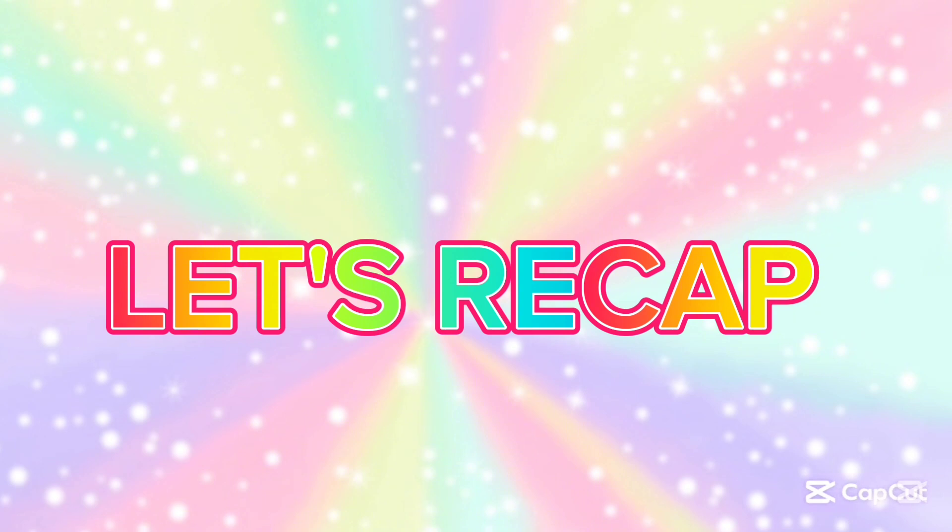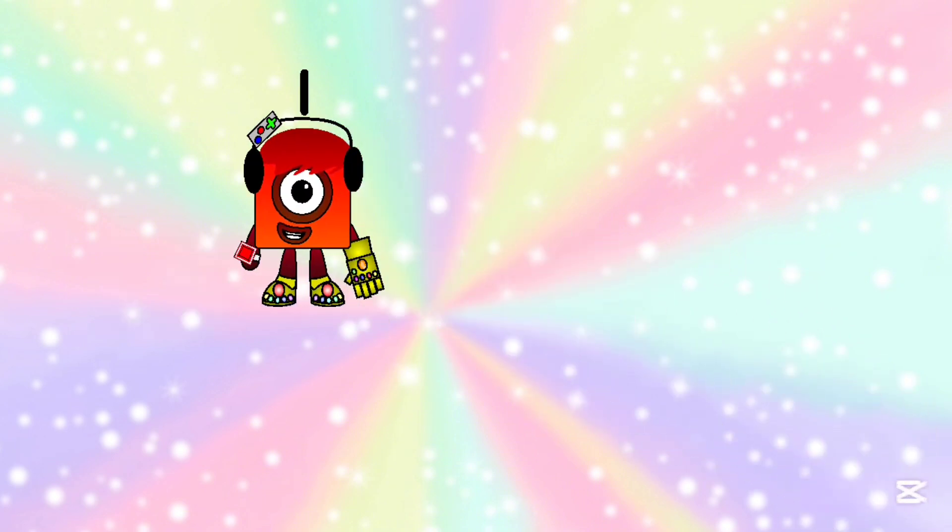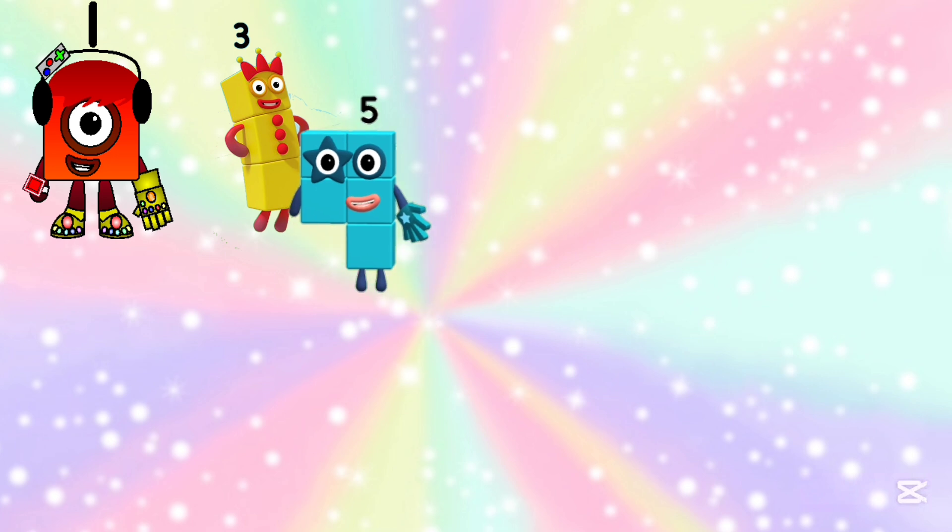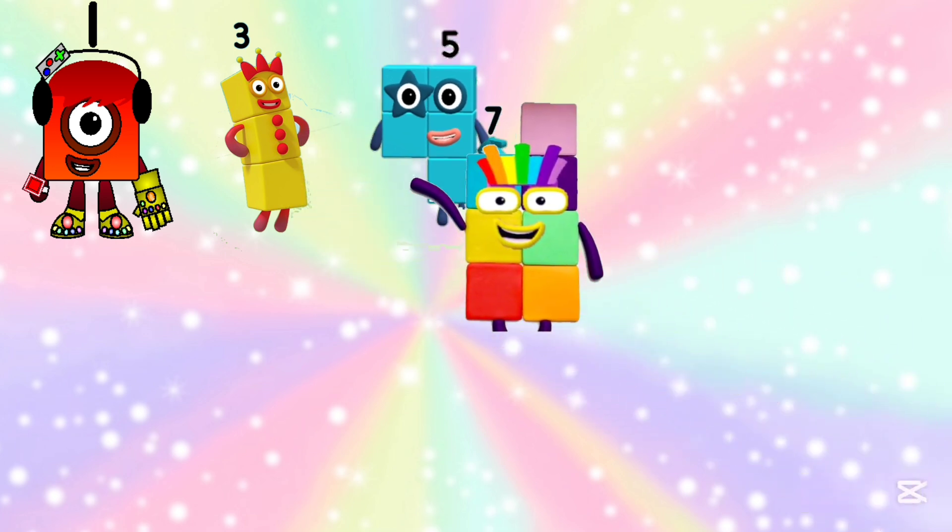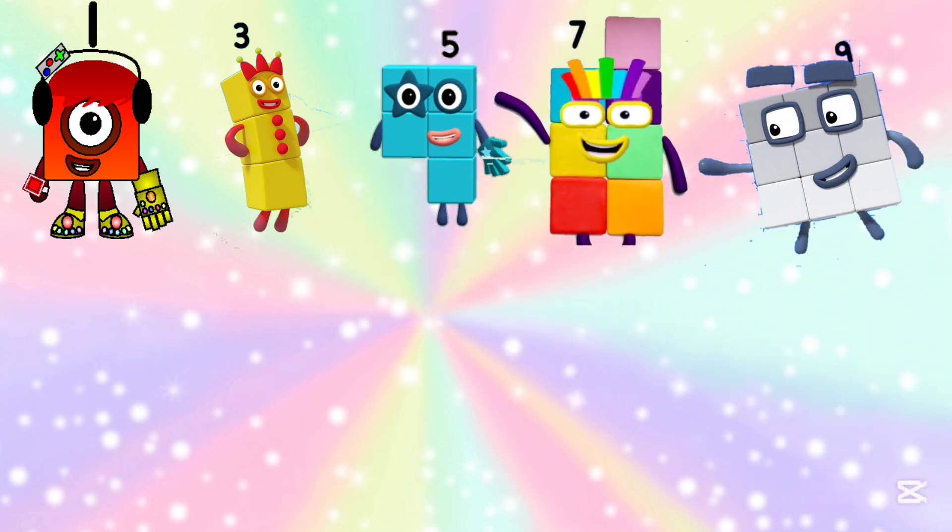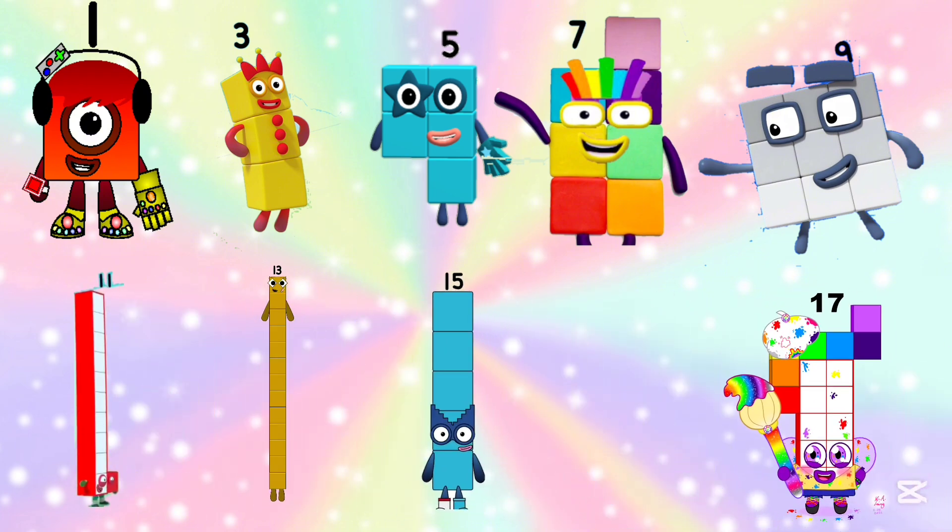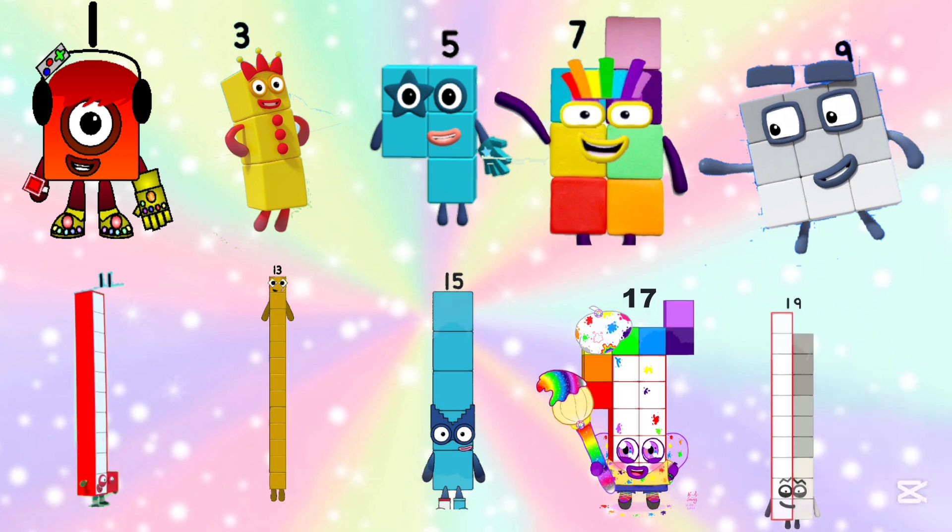Let's do a recap. Odd numbers are one, three, five, seven, nine, eleven, thirteen, fifteen, seventeen, nineteen,